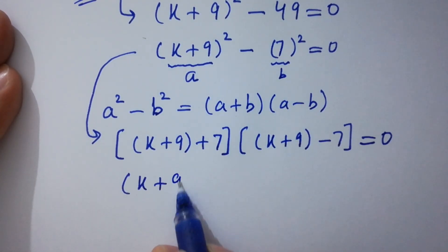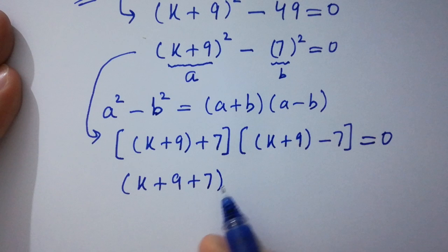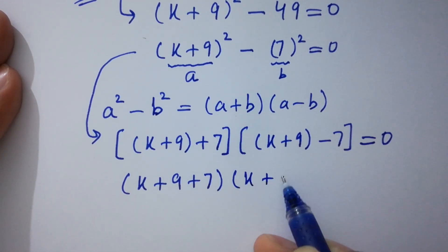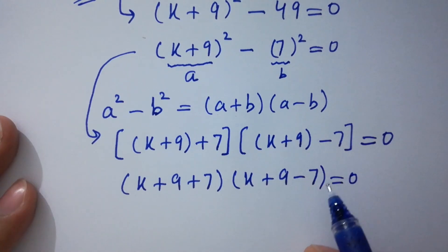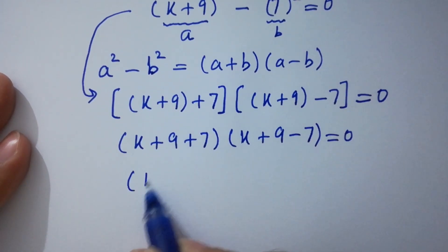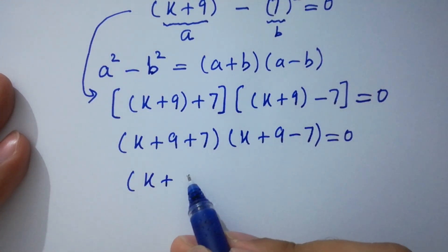So (k + 9 + 7)(k + 9 - 7) = 0. k + 9 + 7, we have here 16.